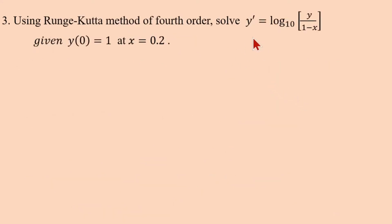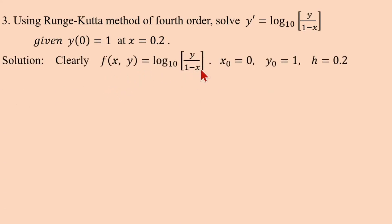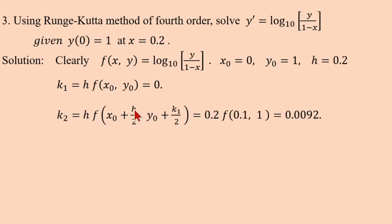One more example: y' = log₁₀(y/(1-x)). x₀ = 0, y₀ = 1, h = 0.2. f(x,y) = log₁₀(y/(1-x)). k1 = h·f(0, 1) = 0.2·log₁₀(1/1) = 0.2·0 = 0. For k2: since k1 = 0, y-value = y₀ = 1, x-value = 0.1. k2 = 0.2·log₁₀(1/(1-0.1)) = 0.0092.